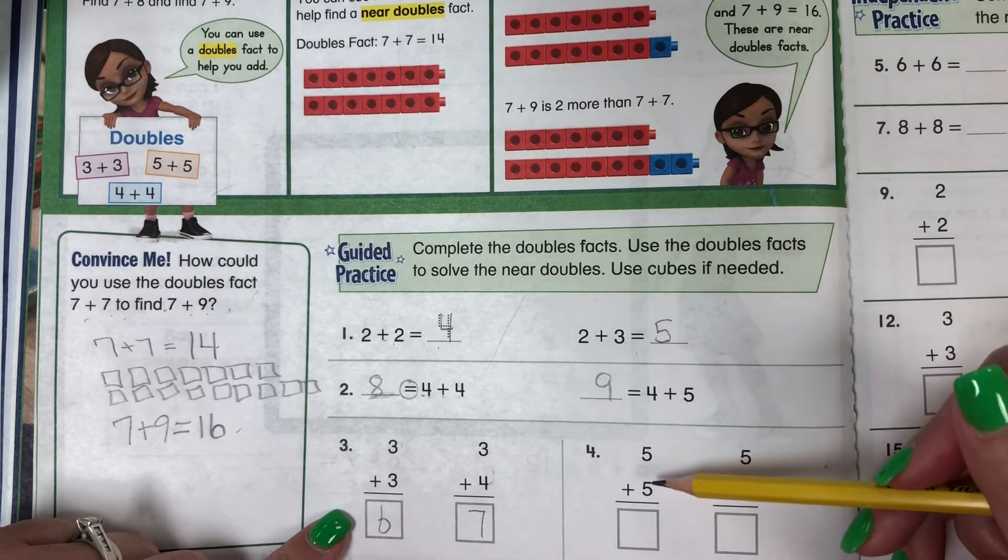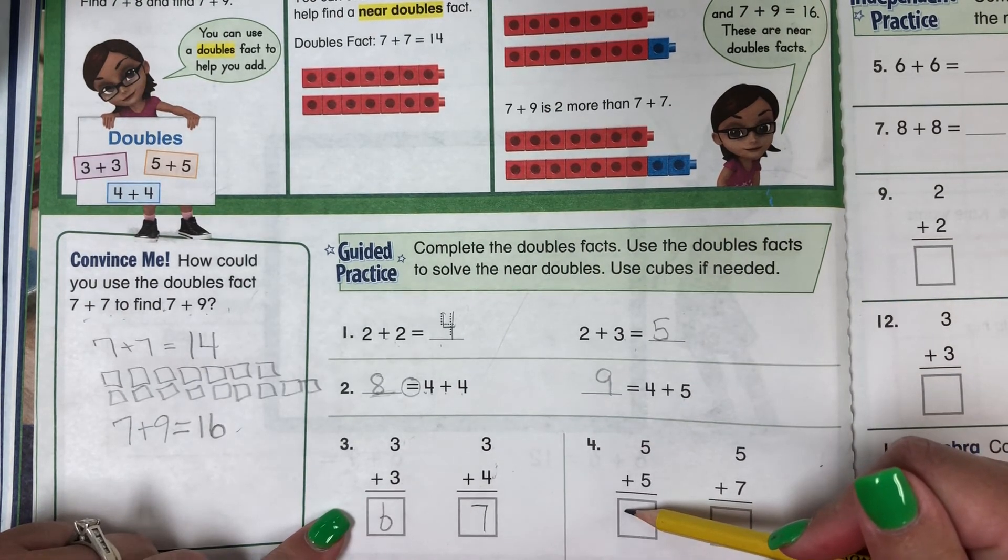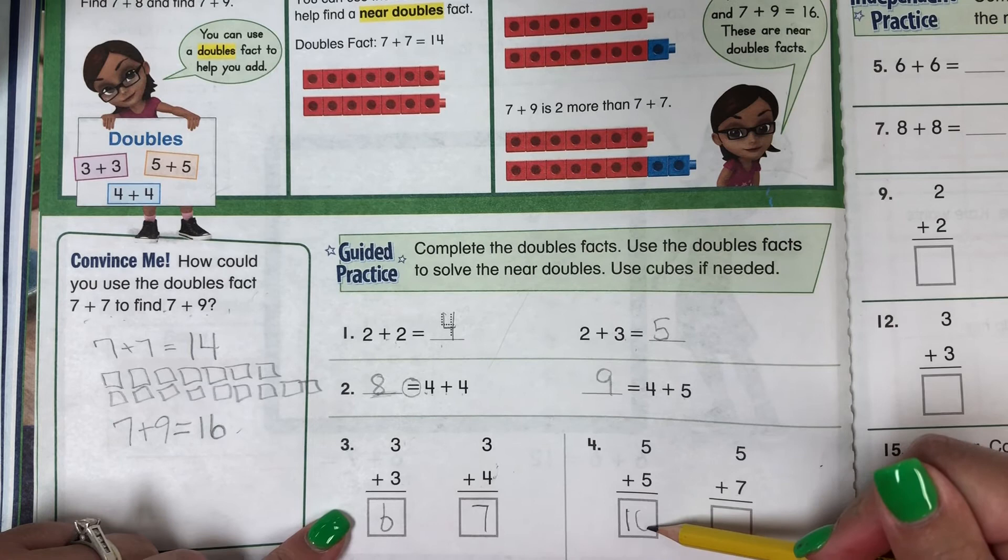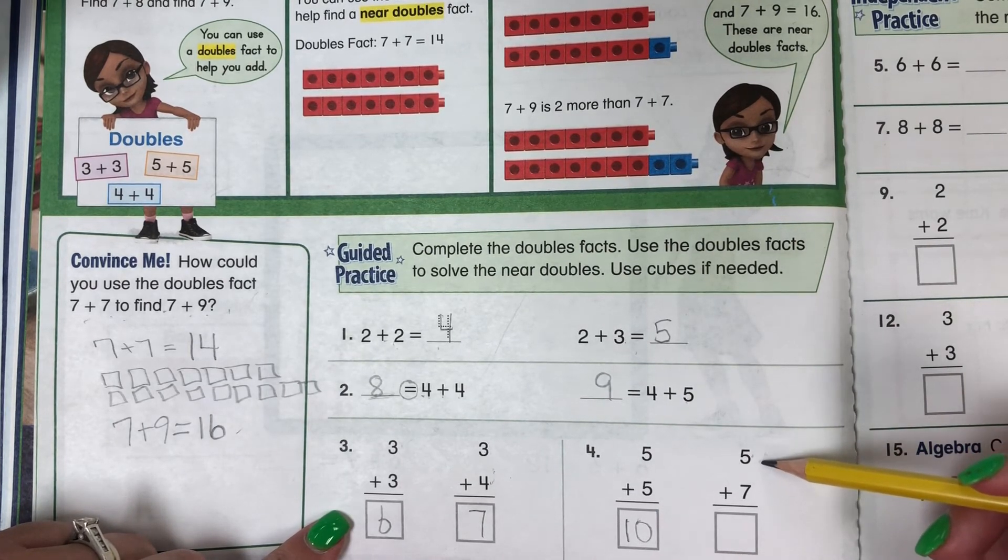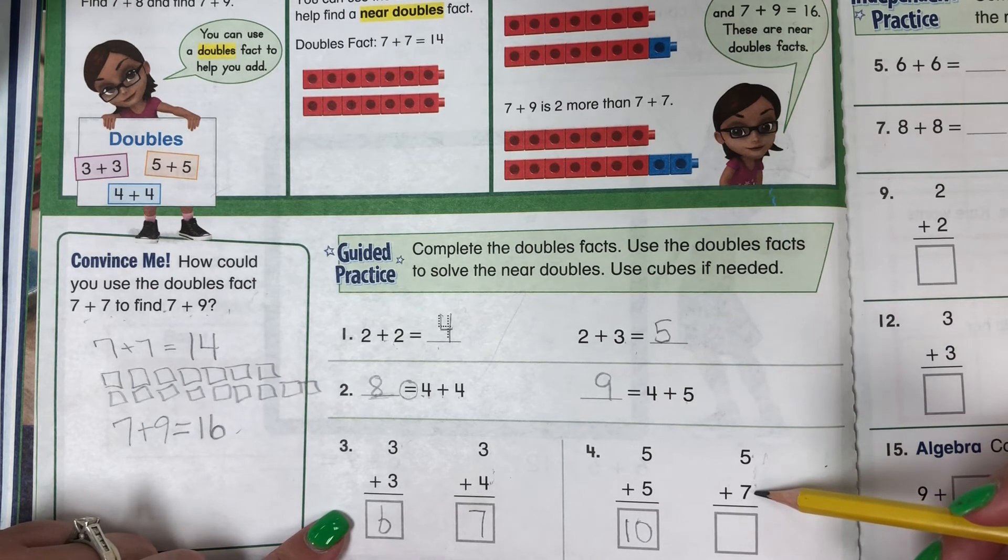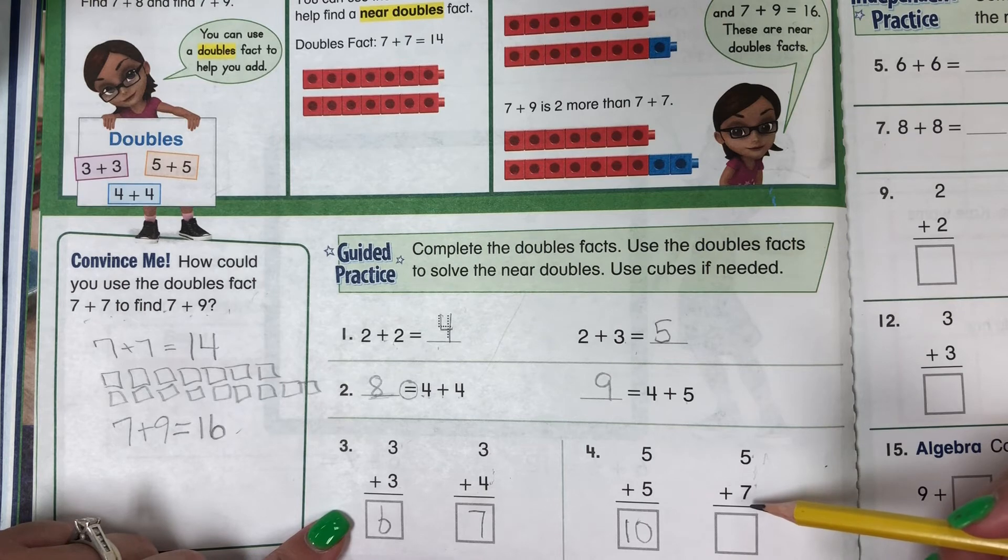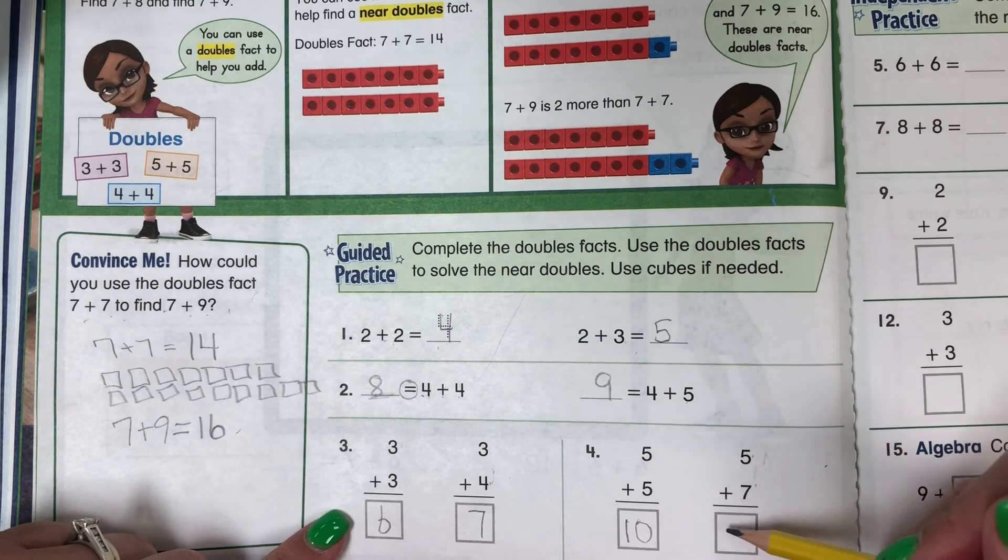5 plus 5 is 10. Now 5 plus 7. 7 is 2 more than 5. So 5 plus 7 is going to be 10 plus 2 more, which is 12.